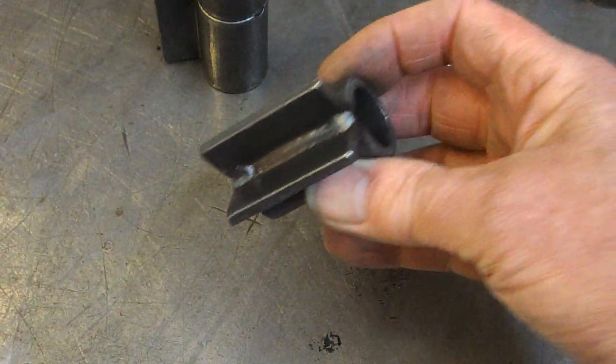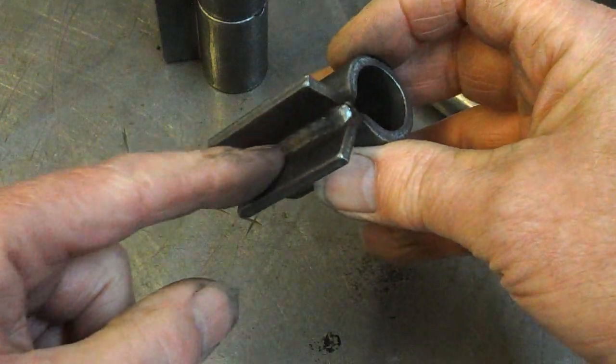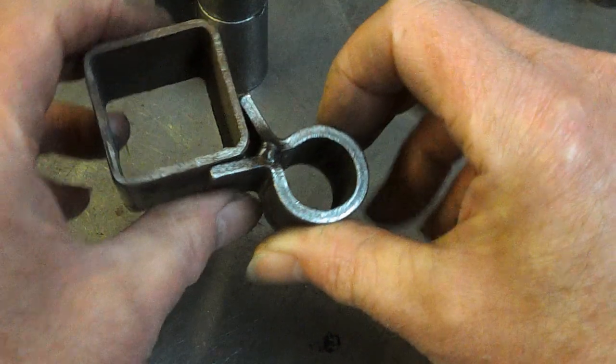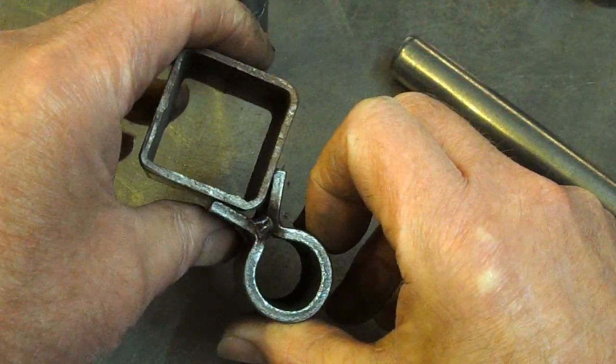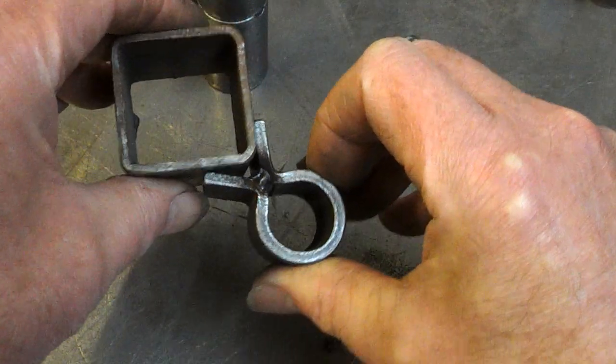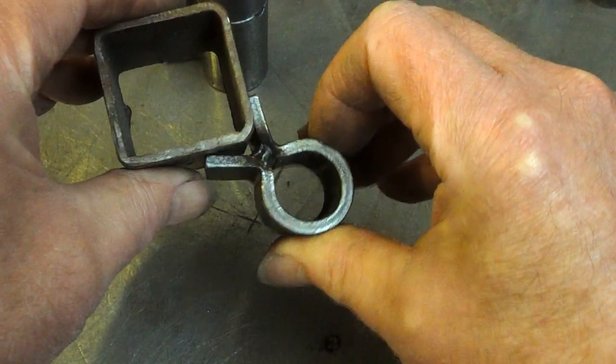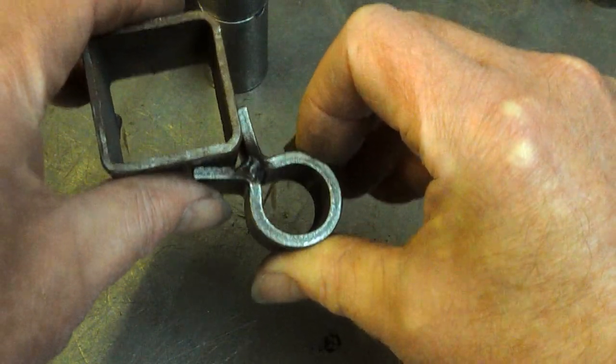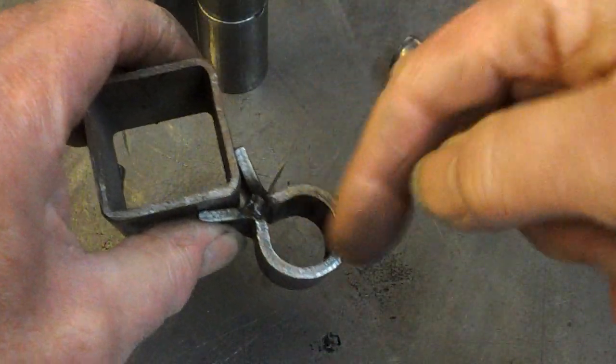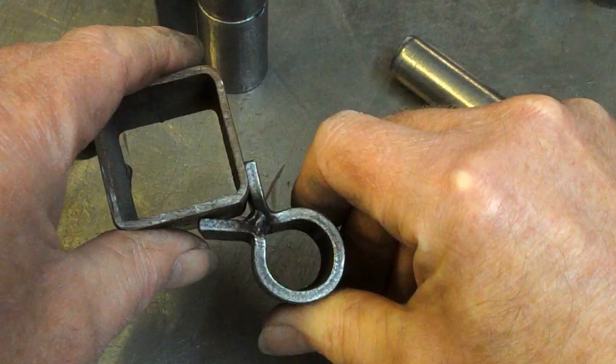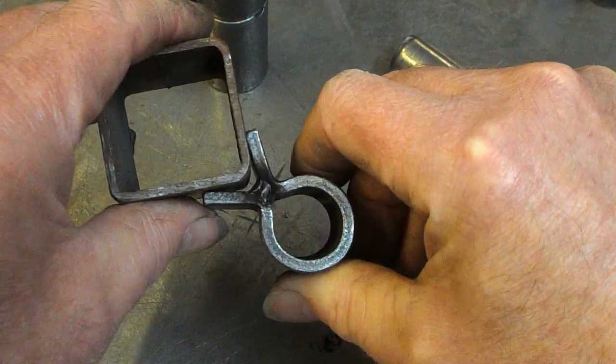So I've put a weld in here to hold these together so that I can do something with this angle. That's just rubbish. You could weld that on there and I suppose it gives you a bit of scope to adjust it in this direction. That's not really good though, is it?